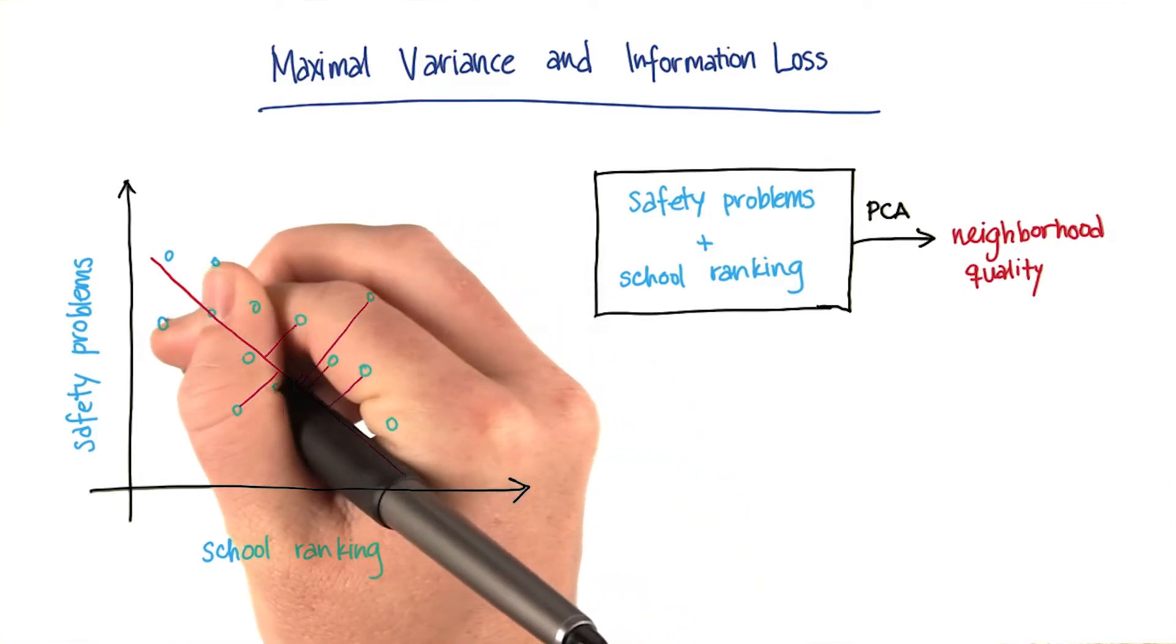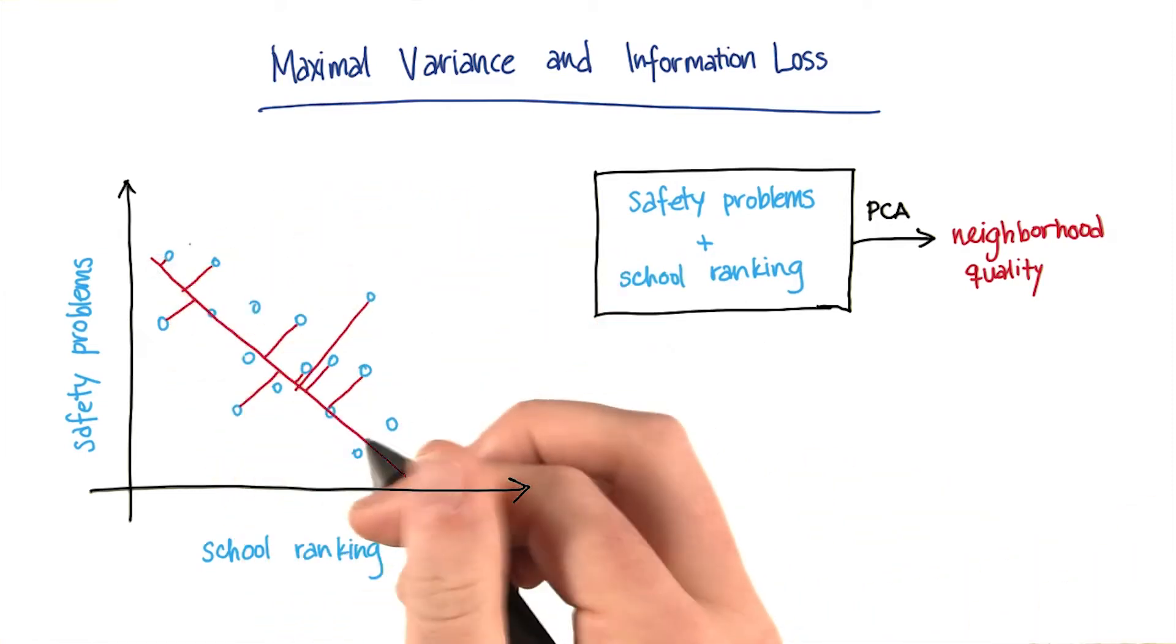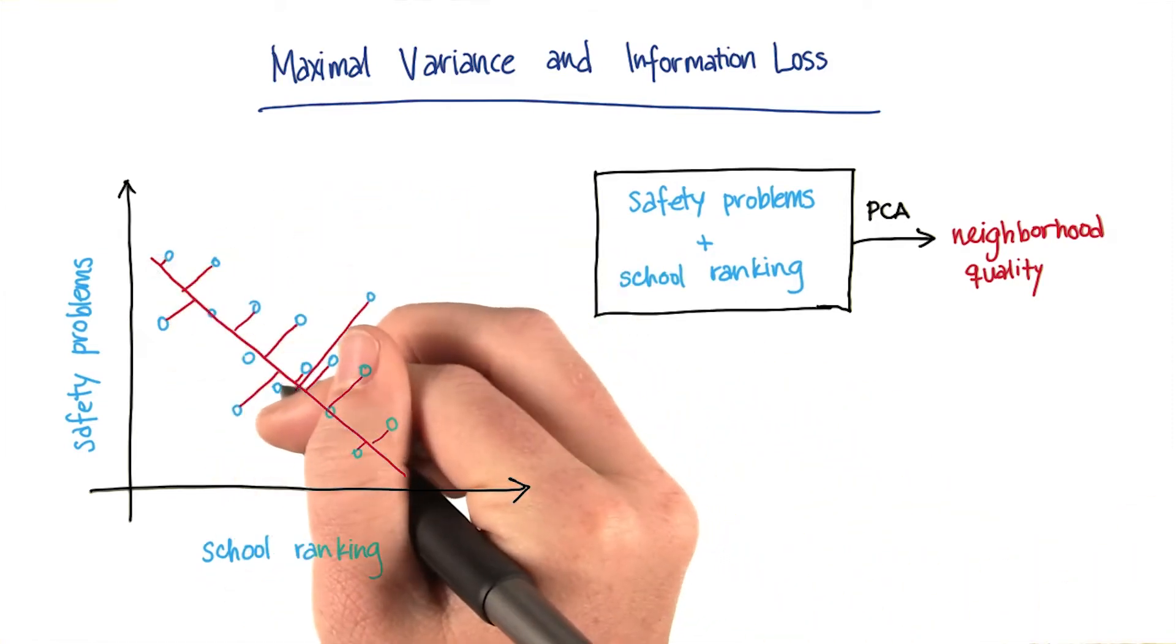The distance between the points and their new projected spots on the new feature on the line. And we can sum this up over all the points. We'll get some number.